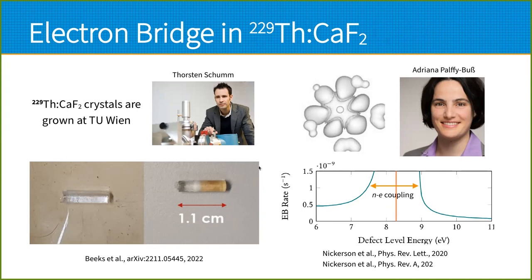We calculated the DFT wavefunctions and supplied them to the group of Adriana Palfibus at the University of Würzburg. She and her group developed a formalism to calculate electron bridge transition rates from the DFT wavefunctions. The main result is summarized in this picture, where we see the electron bridge transition rate depending on these thorium level energies. I want you to focus on the resonance around the nuclear energy, whose width depends on the strength of the nucleus-electron coupling.